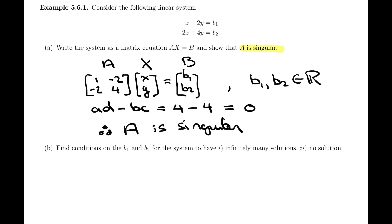In part B, we're asked to find conditions on the constants b1 and b2 for the system to have infinitely many solutions and no solutions. These are the only two cases we're asked for, and we'll see why in a second — because the case of just one solution is not going to be possible here.